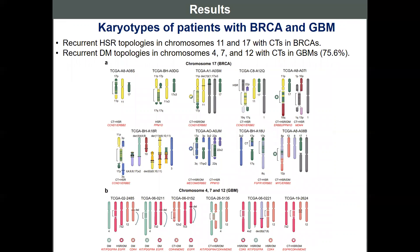Next, we applied our framework to patients with BRCA and GBM in the TCGA database. We could find recurrent derivative chromosomes between chromosome 11 and chromosome 17 in breast cancer patients, which have focal amplification structures of oncogenes ERBB2 and CCND1. Chromosome 17 is recurrently translocated not only with chromosome 11, but also with other chromosomes such as chromosome 3 or chromosome 8, and oncogenes are co-amplified in these derivative chromosomes.